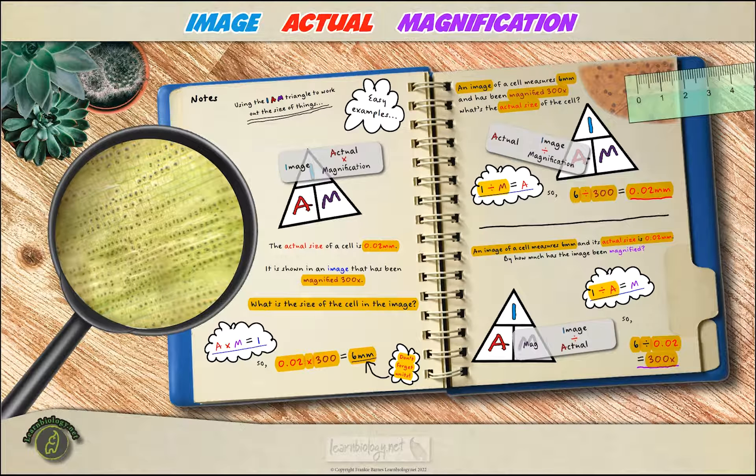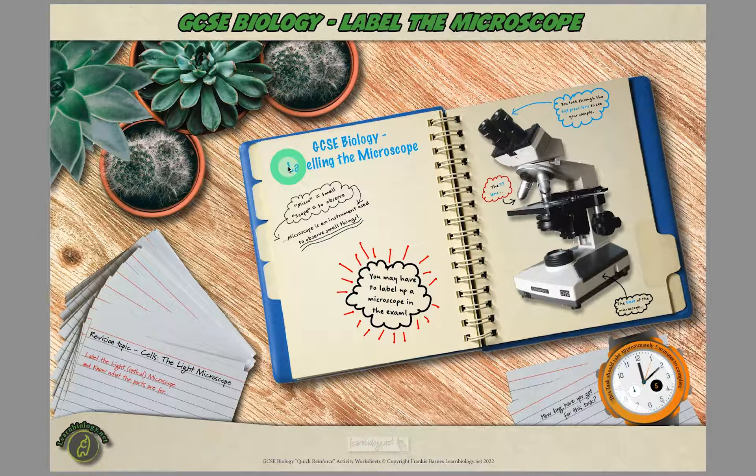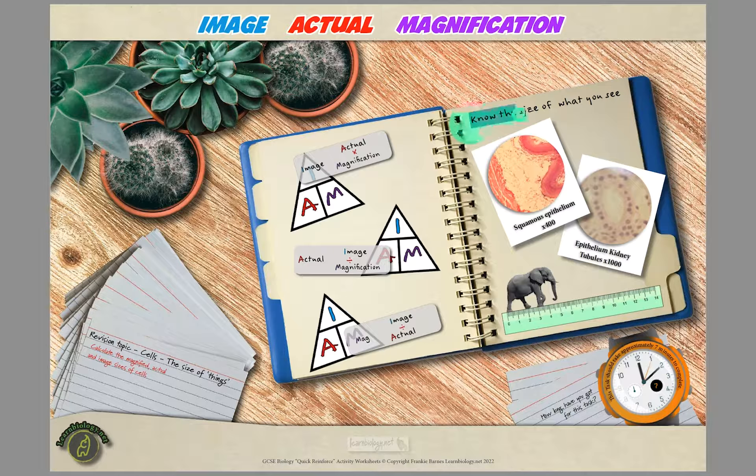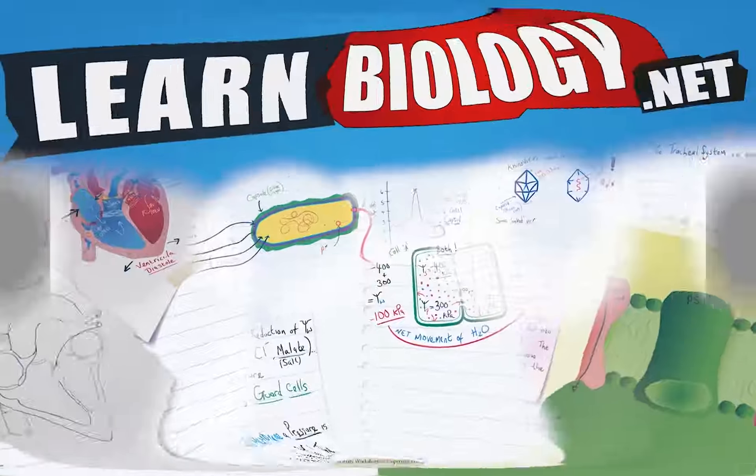Right, so that's pretty much it for this lesson where you've labeled up a microscope and you have been able to work out the size of stuff. What you need to do now is go and download the worksheets and test yourself. Can you label up the microscope and can you complete these little calculations using the I am triangle? Once you've done those you can carry on to the next lesson. Until then, take it easy.